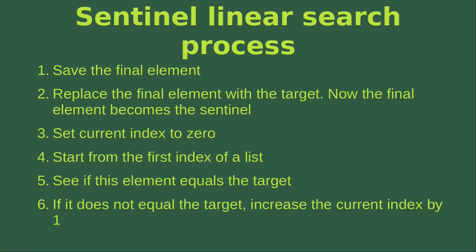First, we have to save the final element of the array. Then we replace the final element with the target element — in this case, the final element would become the sentinel. Then we set the current index to zero, starting from the first index of the list, which is index zero.